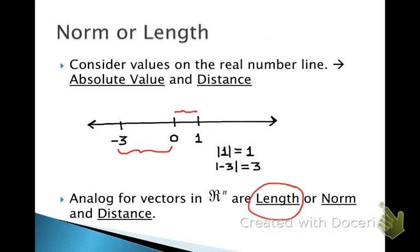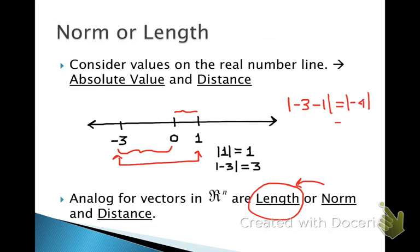When we find something called the norm, we're looking at the length of a vector — its distance from the tip of the vector to the origin. If we want to find the distance between two values on the real number line, say 1 and negative 3, we take the absolute value of the difference: negative 3 minus 1 gives the absolute value of negative 4, which is 4. So the distance from negative 3 to 1 is 4. The analogous concept for vectors in R^n is the distance between the tips of two vectors.